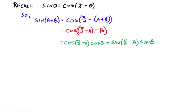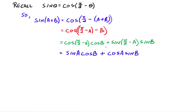Now, cos(π/2 − A) is just sinA, and sin(π/2 − A) is cosA. So sin(A+B) = sinA cosB + cosA sinB. This is our third identity — the sine of the sum of two angles equals sine of the first times cosine of the second plus cosine of the first times sine of the second.